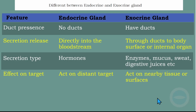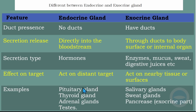Another difference is the effect on the target. Endocrine glands act on a distant target — they don't have to be near it. But with exocrine glands, since the secretion travels via a duct, it acts on a nearby tissue or surface. Examples of endocrine glands are the pituitary gland, thyroid gland, adrenal gland, and testes. Examples of exocrine glands are salivary gland, sweat gland, and the pancreas — though remember the pancreas falls under both endocrine and exocrine glands.